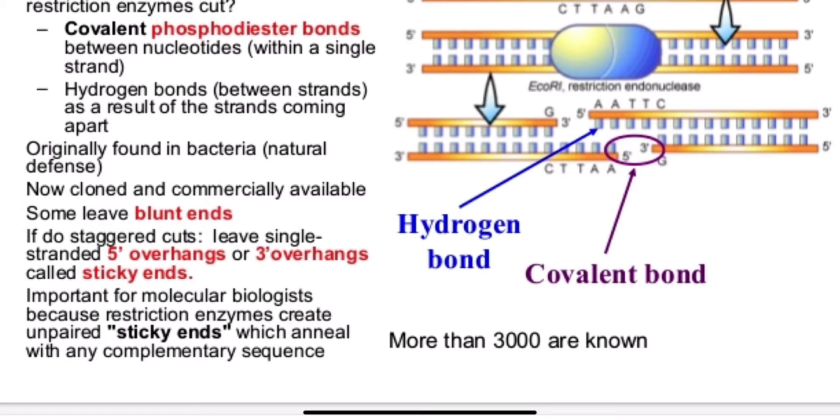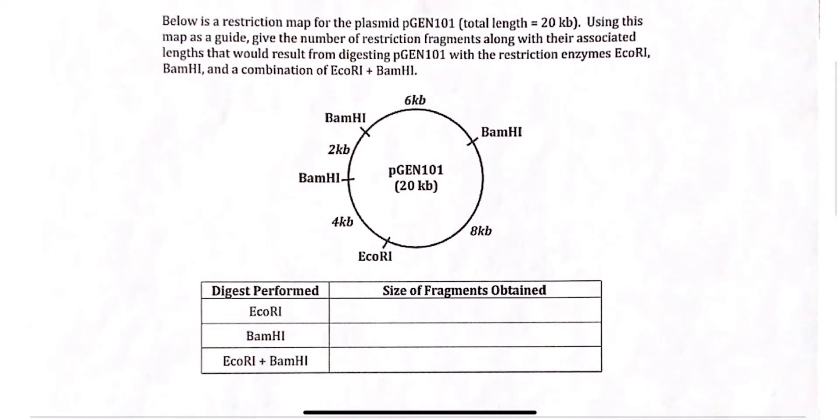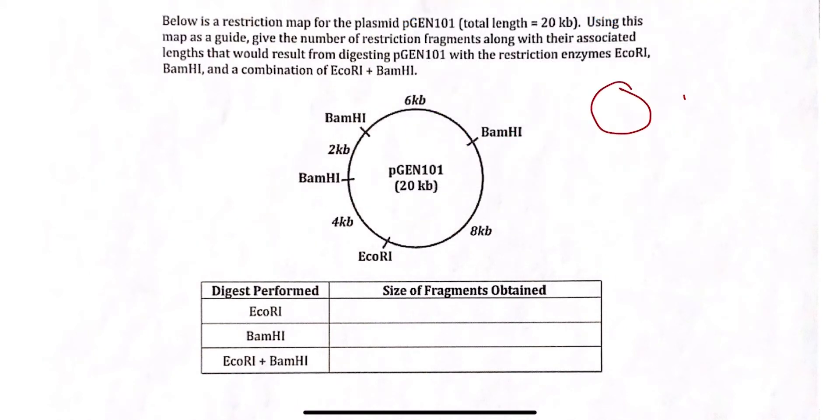I do want to show you how we read a restriction map. Let me open this one for us. This is an example of a restriction map for the plasmid pGEN101. Its total length is 20 kb. Let me just remind you that a plasmid is a circular piece of DNA. It is often found in bacteria.